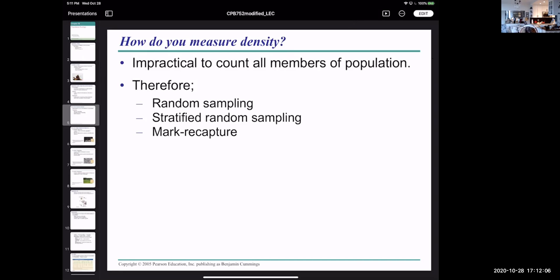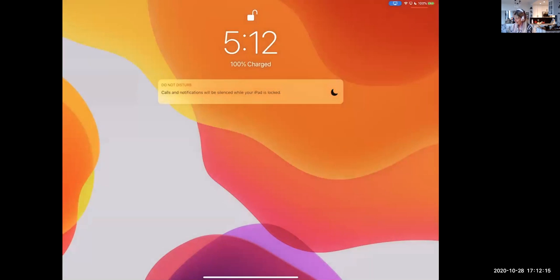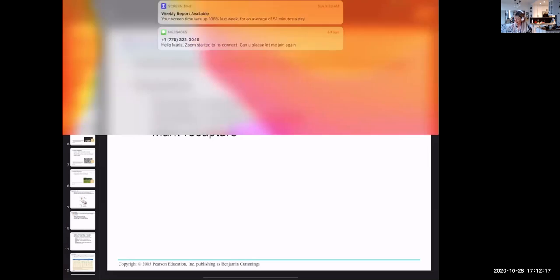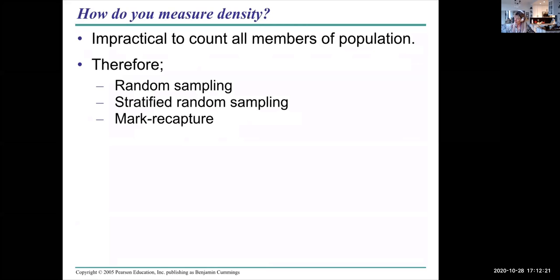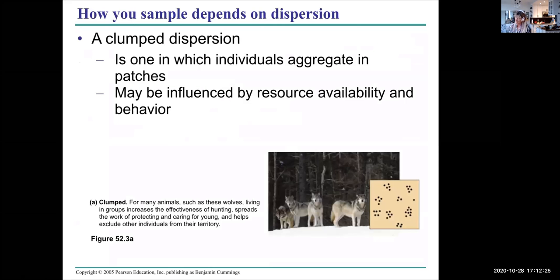Anyway, he apologized and we were still friends after that. Now let's go to our next topic, which is dispersion. When you're sampling, it's important that you know how your population is dispersed. Is it a clump dispersion?